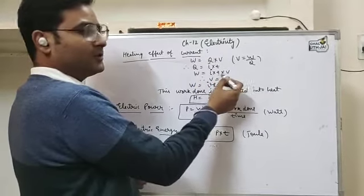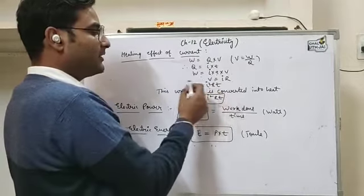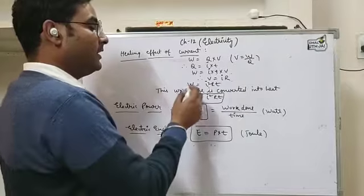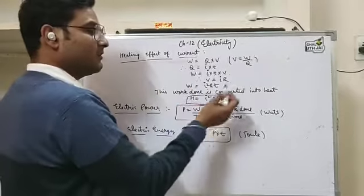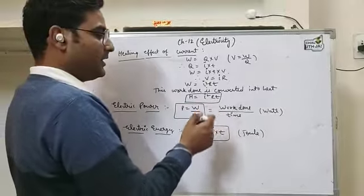Now, from Ohm's law, V equals IR. We put this value of V here. So, we get W equals I square R T. We know that this work done is converted into heat. So, the expression for heat is I square R T.